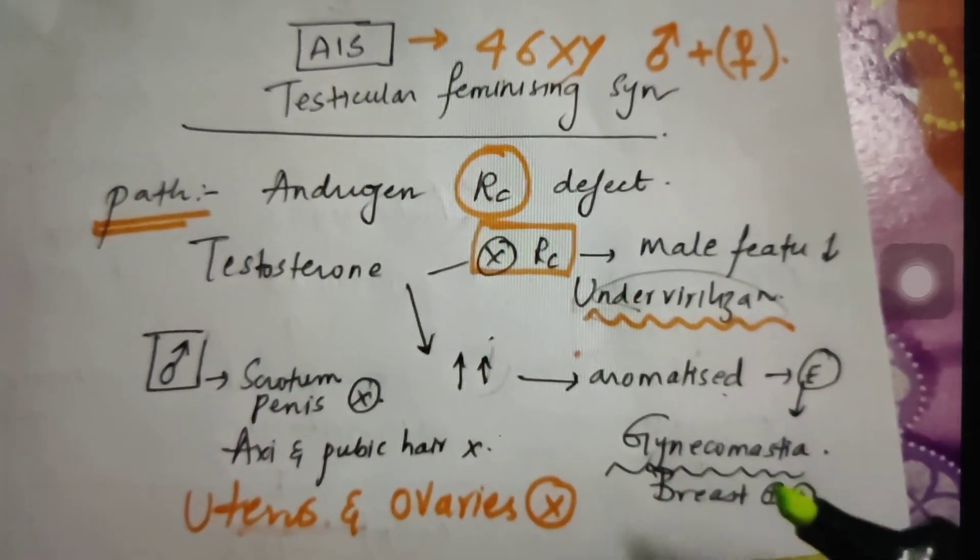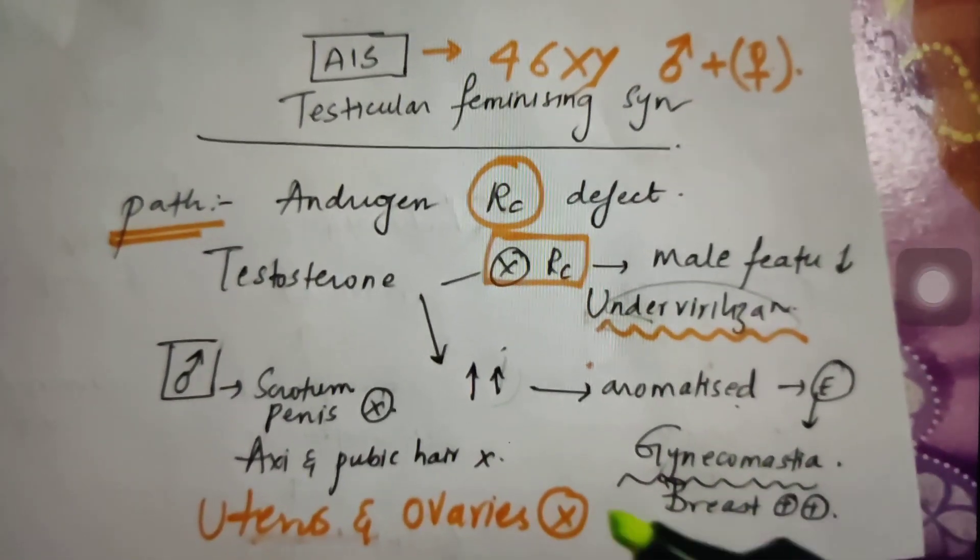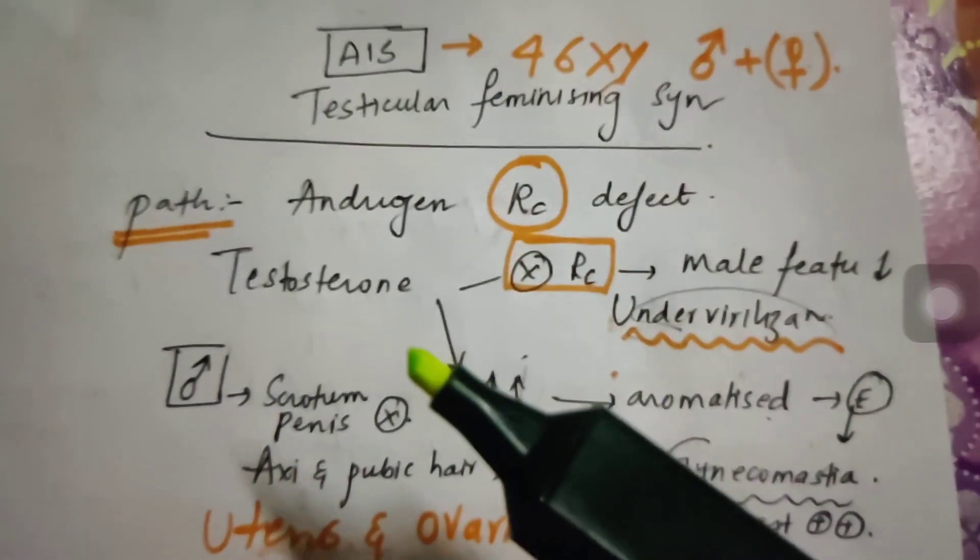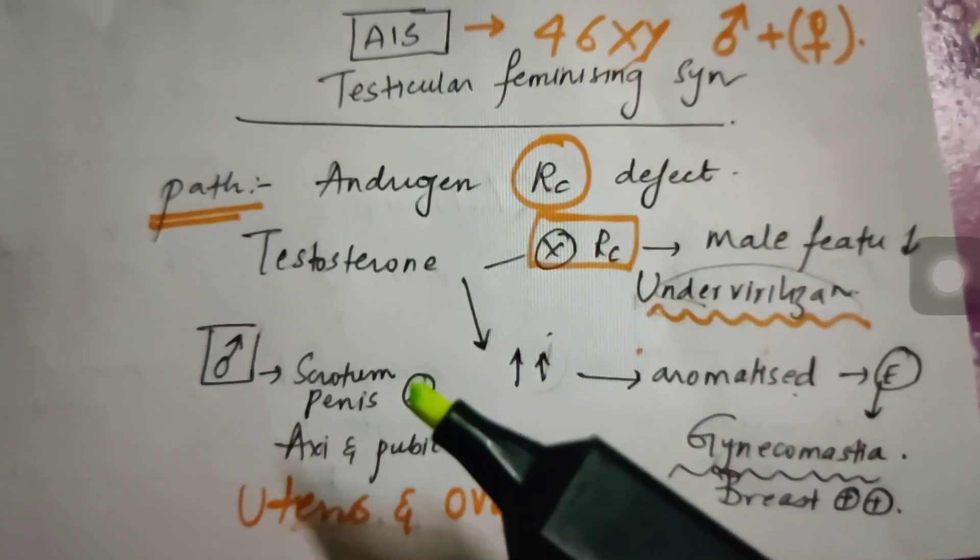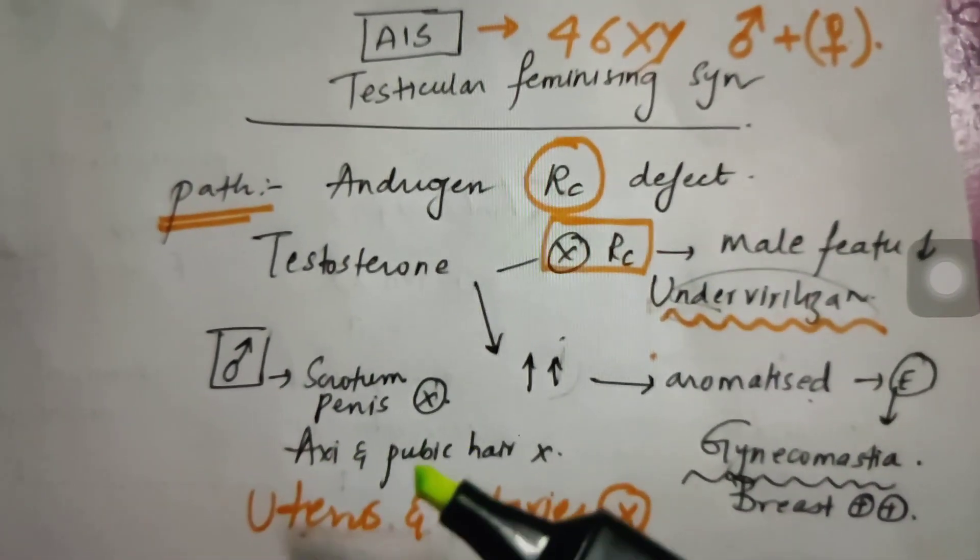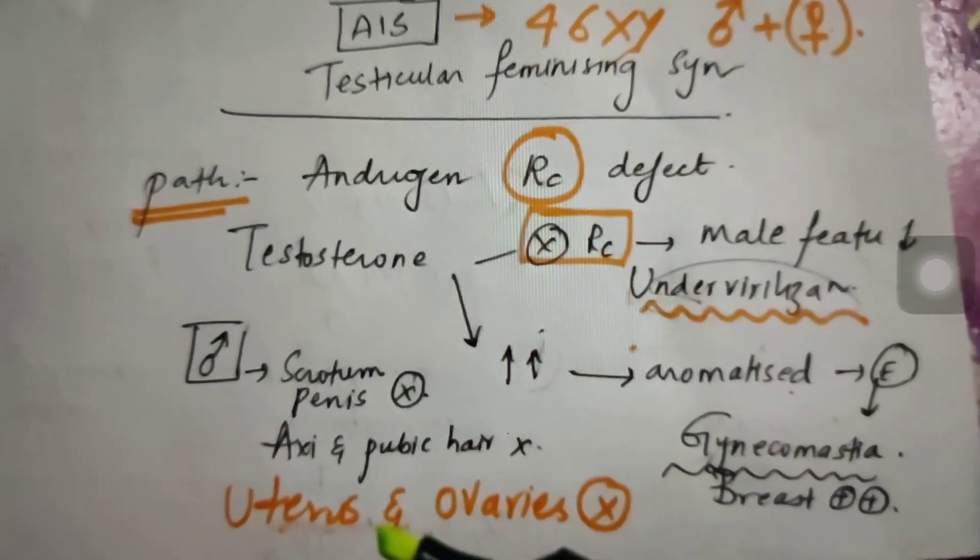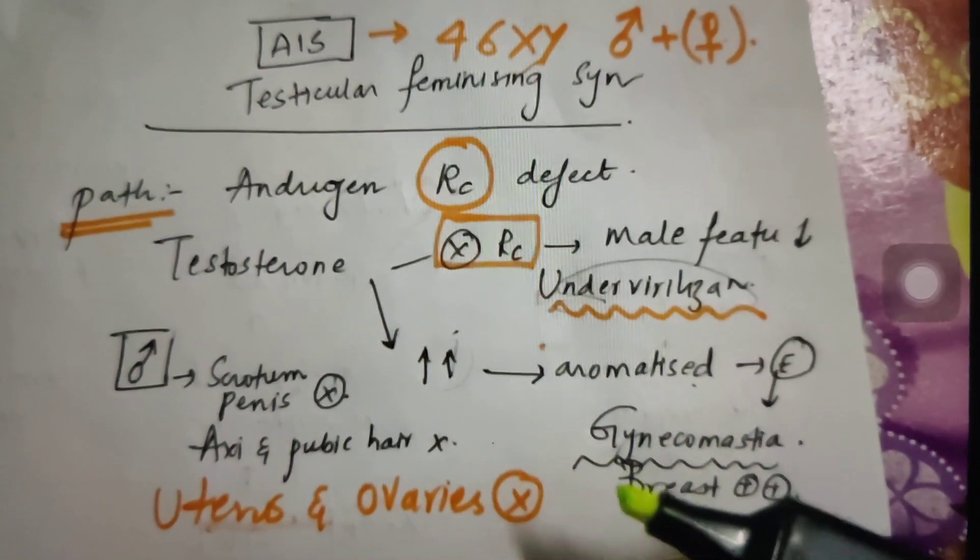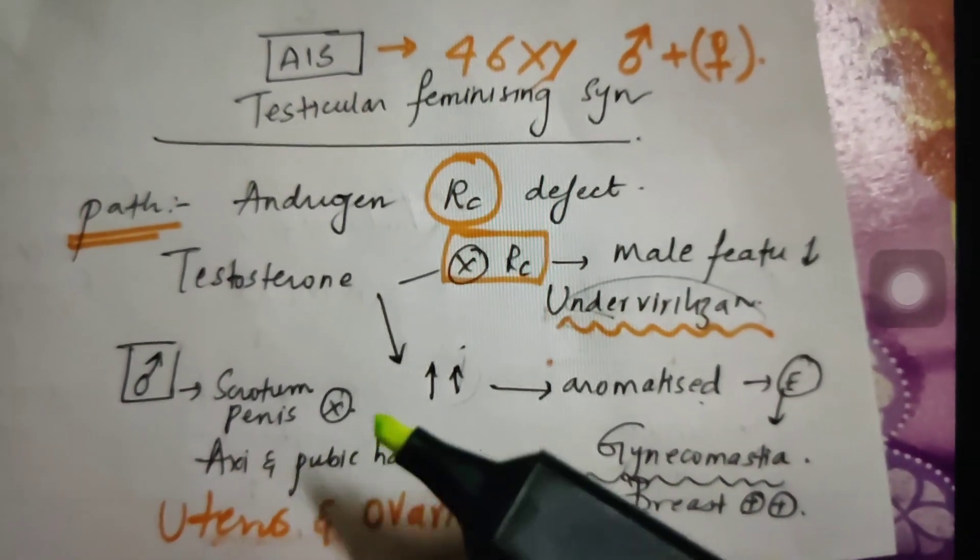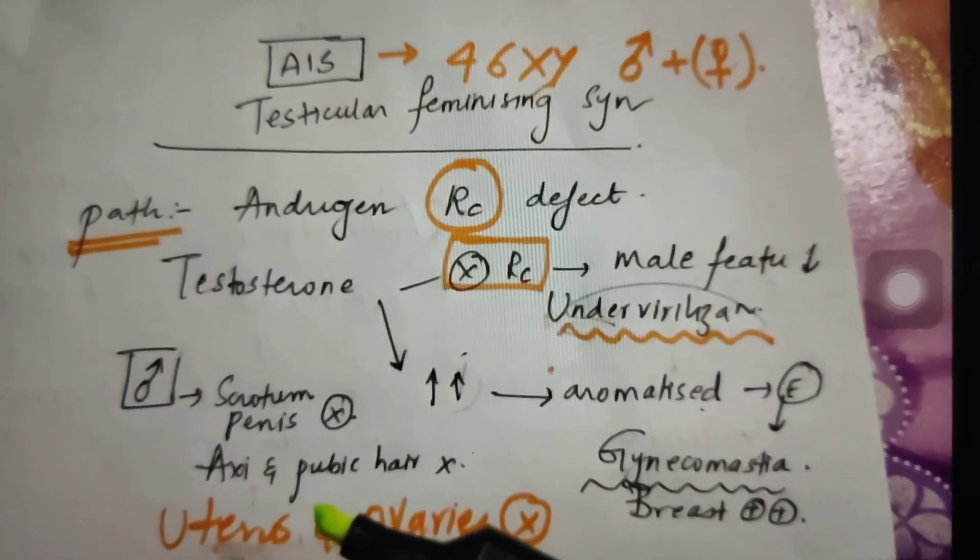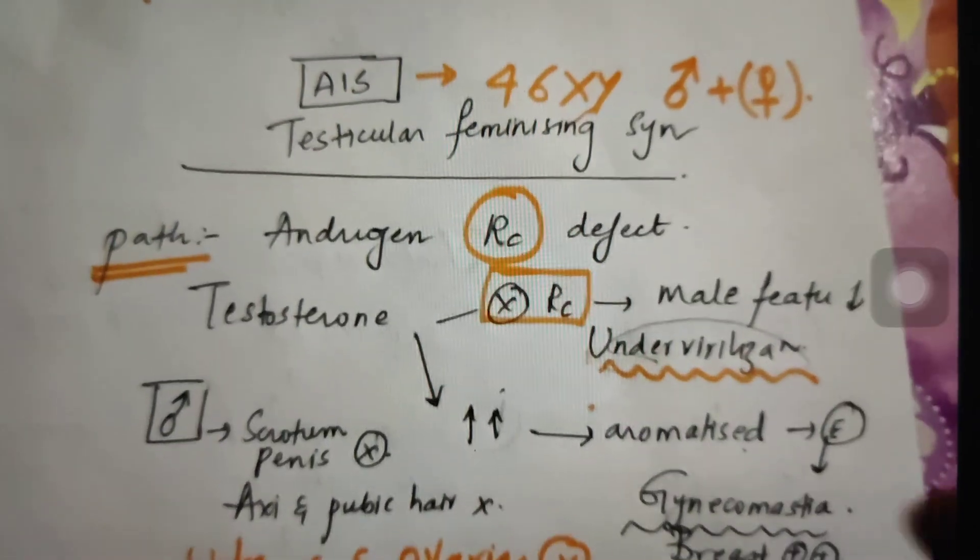And this estrogen finally acts on the breast tissue leading to enlargement of the breast, which is called gynecomastia. So at the end, the patient with AIS presents with underdeveloped or absent scrotum and penis with absent axillary and pubic hair. And ovaries and uterus are also absent, but the patient might present with gynecomastia, that is breast enlargement. So axillary and pubic hair is absent in AIS, whereas axillary pubic hair is present in Mullerian agenesis that we have learned previously in the previous sheet.